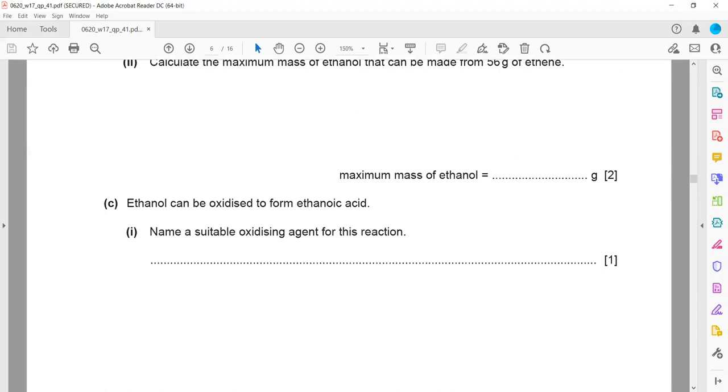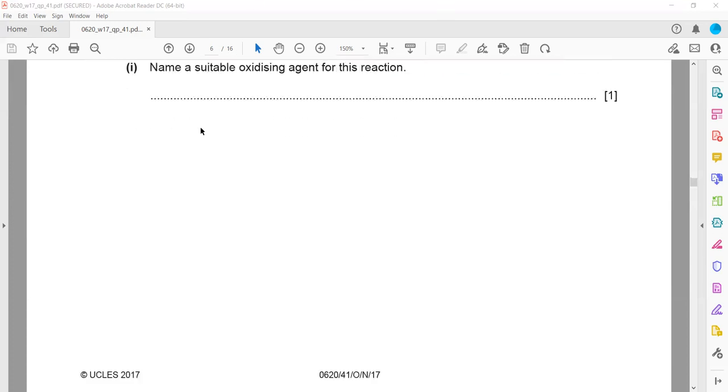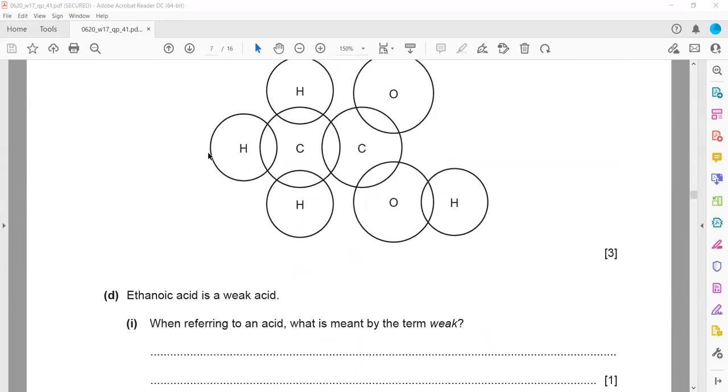Ethanol can be oxidized to form ethanoic acid. Any alcohol can be oxidized to carboxylic acid. What is the oxidizing agent? You have to learn the name of this oxidizing agent, which is acidified potassium manganate 7. Memorize this oxidizing agent for conversion of alcohol to carboxylic acid.